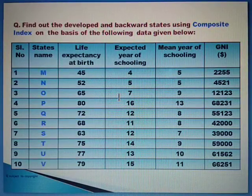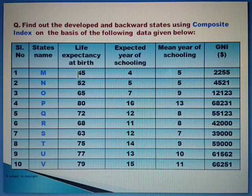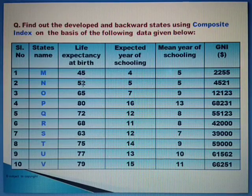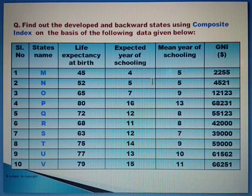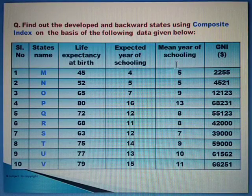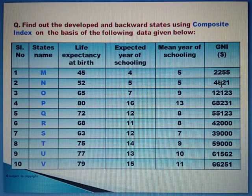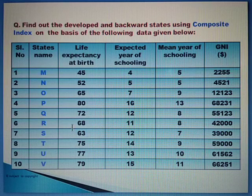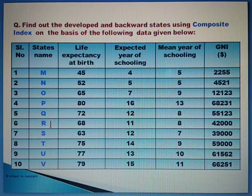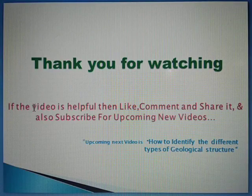Here is a practice set — a practice question you can screenshot and calculate. Keep in mind that life expectancy at birth is given, not the Life Expectancy Index. Similarly, the Educational Index is not given; instead, expected years of schooling and mean years of schooling are provided. And instead of an Income Index, GNI in dollars is given. Using these actual values, first find out the individual indices and then compile all of them to get the HDI. Thank you for watching.